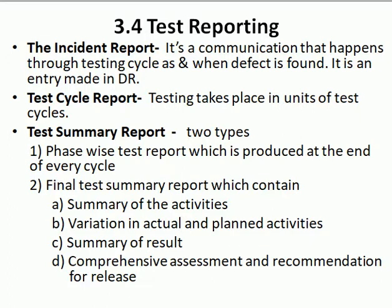Summary of activities means documenting what was done during testing. Variation in actual and planned activities means, for example, the actual schedule was two days but the planned schedule was three days. Similarly, we planned a certain number of test cases but actually needed extra test cases. Summary of results covers which test cases passed, which failed, and related outcome information.